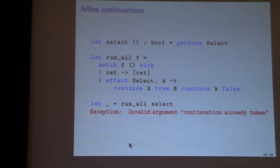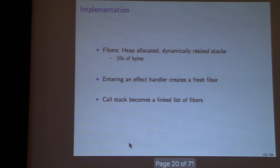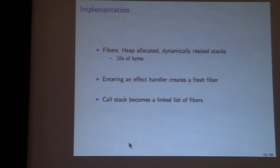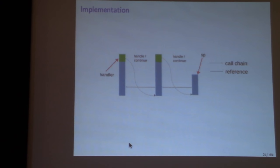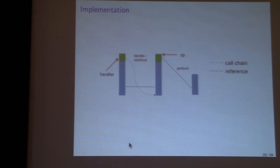Effects are implemented in terms of fibers — small, heap-allocated stacks starting at tens of bytes, which dynamically resize as needed. When you enter an effect handler (the match-with expression), you create a new stack and execute the expression on it. When you perform an effect, you jump back to the previous stack and wrap up the new fiber — and that fiber is your continuation. Every OCaml function checks for sufficient stack space and resizes if needed; simple static analysis eliminates many of those checks.